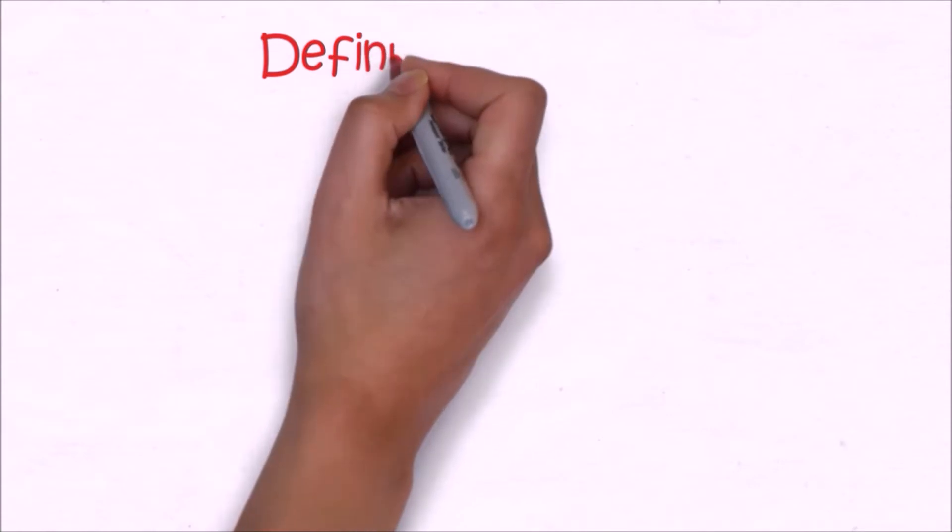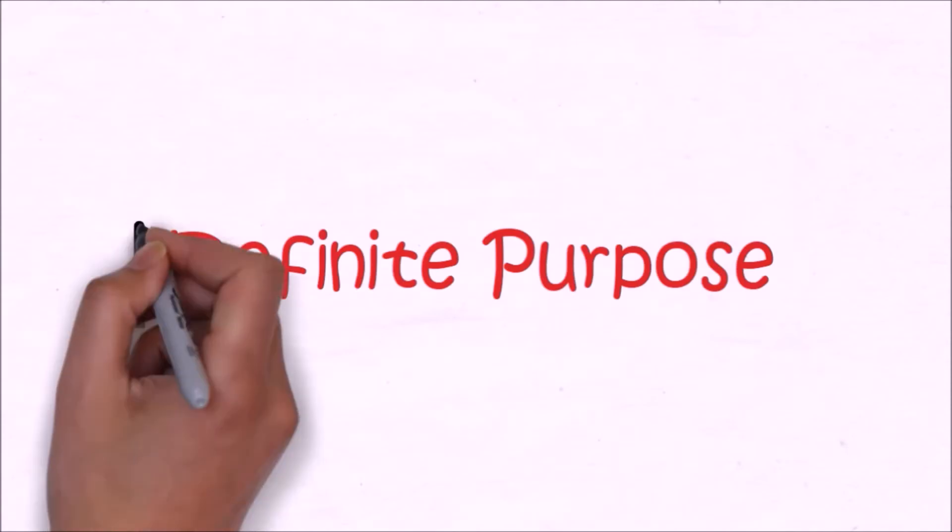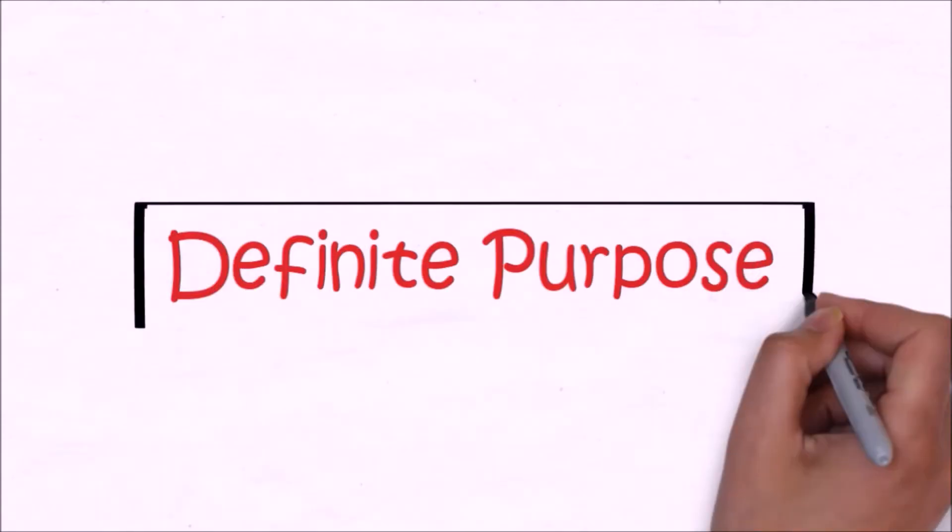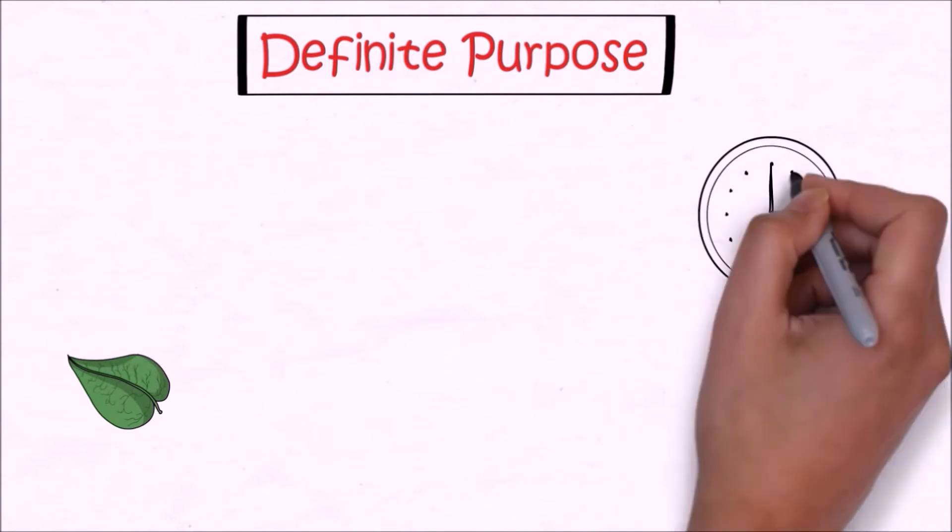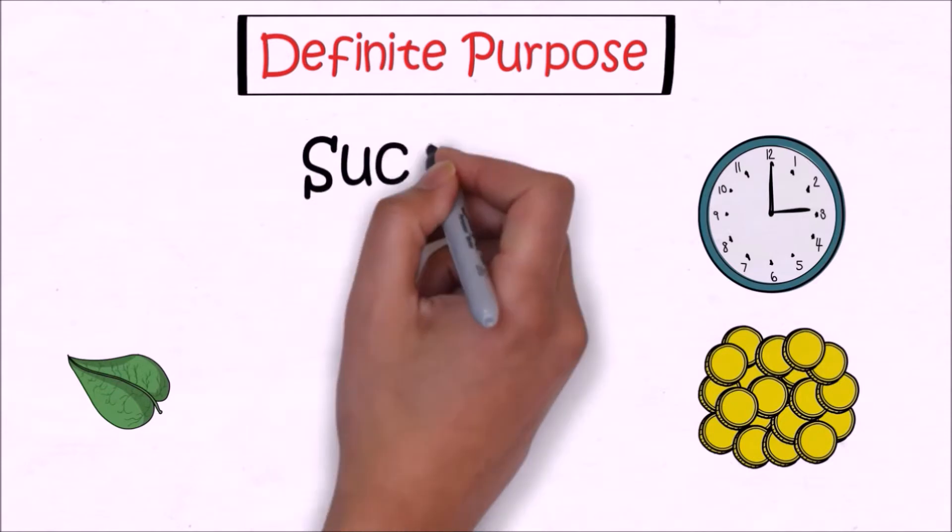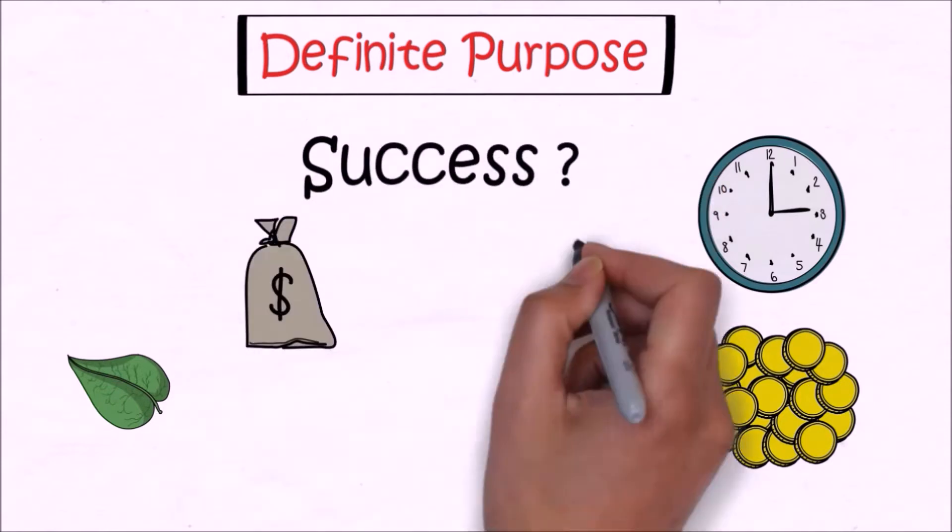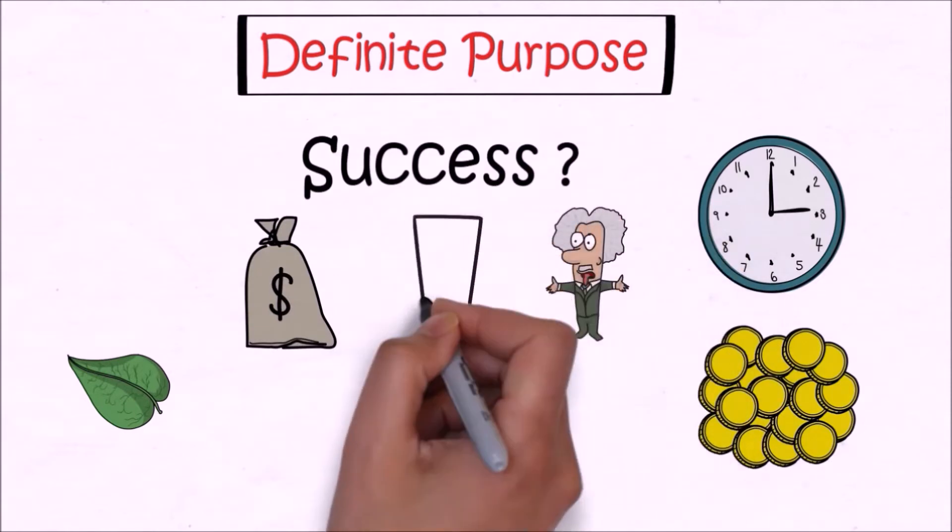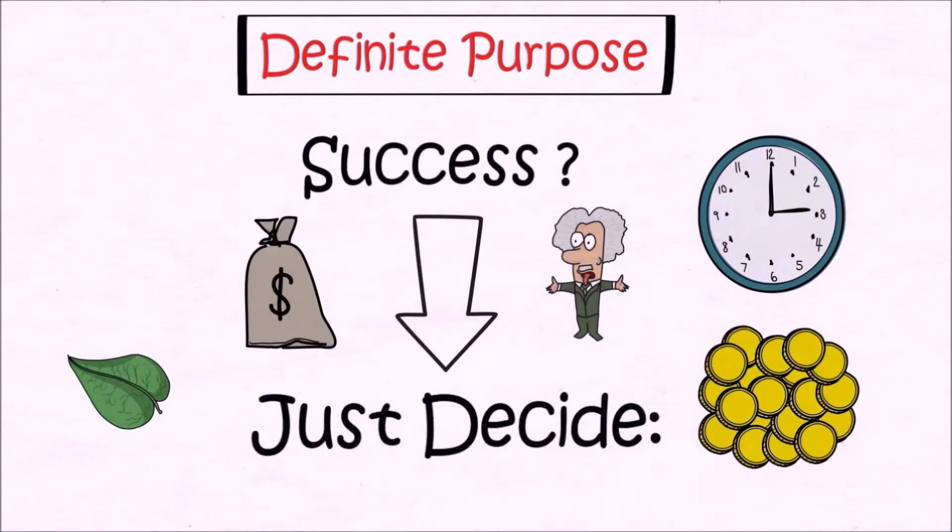But before immersing in those principles, you've got to have a definite purpose. Because if you don't, then you will just drift around here and there from one thing to another like a leaf falling from a tree. You've got to know what you want from this life, what you want to do with your time and resources. You've got to define what success means for you, whether it is earning a million dollars, becoming a world-class athlete, scientist, writer, or anything you can think about. Just decide what you really want from this life.